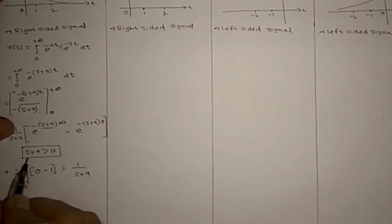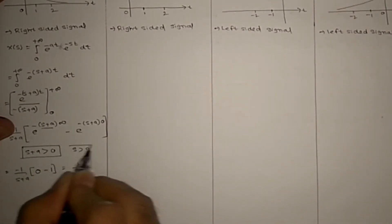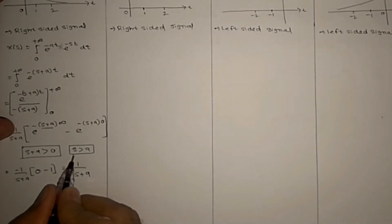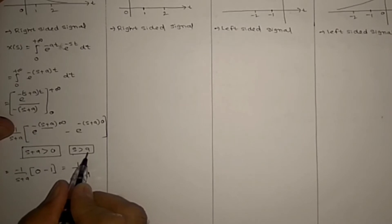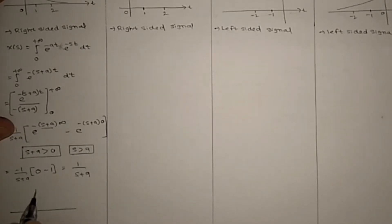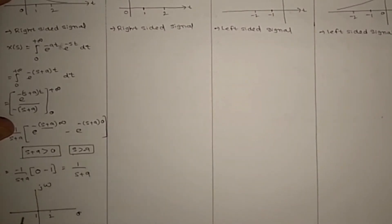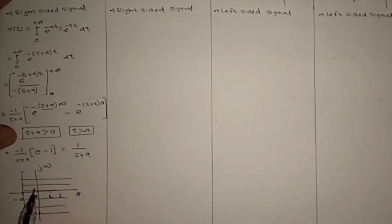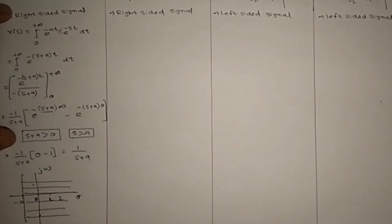The ROC condition here is that Re(s) = sigma must be greater than −a. On the sigma-jω plane, with −a marked, the ROC is to the right. Since the ROC includes the jω axis, this confirms the signal is absolutely integrable.